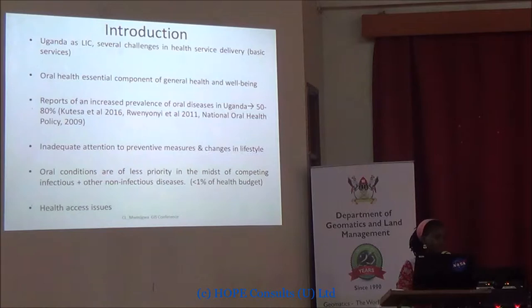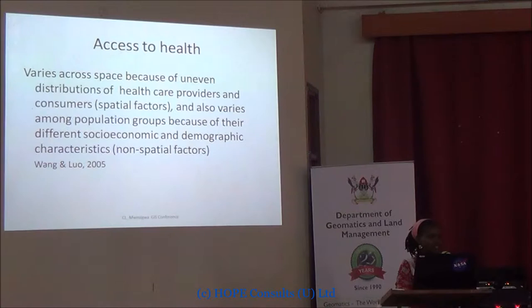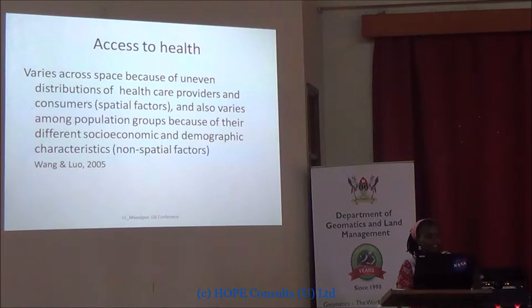We do not have adequate preventive measures. In the face of all these other competing things, oral health is not one of those priority areas. We have less than one percent of our health budgets contributing towards oral health, and yet there are a number of health access issues. Access to health in GIS becomes important because it incorporates both spatial factors, but non-spatial factors as well — social demographic factors, education, poverty, and demographic characteristics.